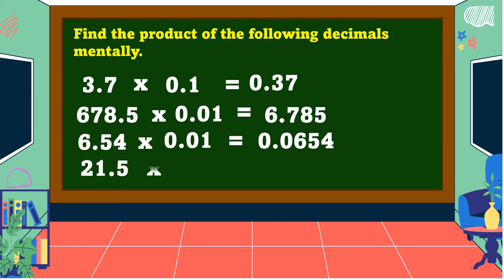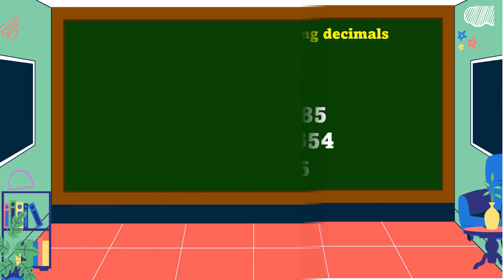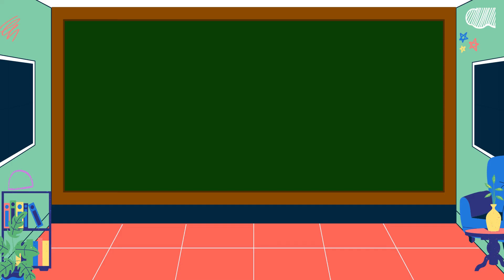Another example: twenty-one and five-tenths times one-tenth. The answer is equal to two and fifteen-hundredths. I hope you understand our lesson for today.